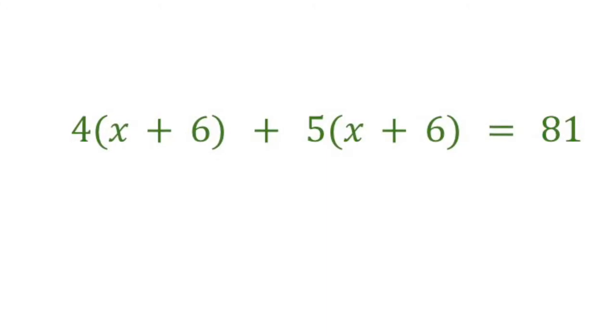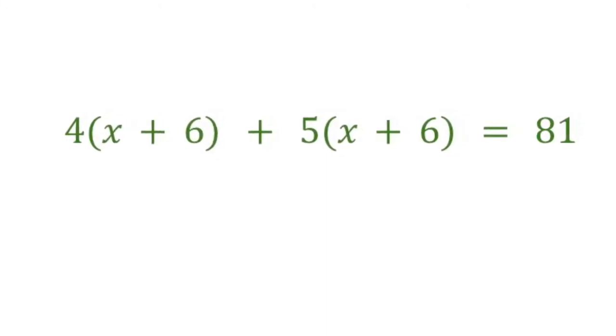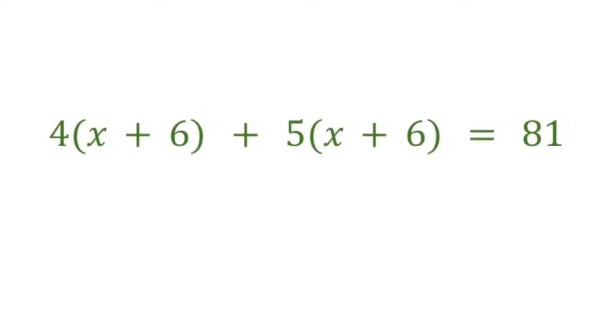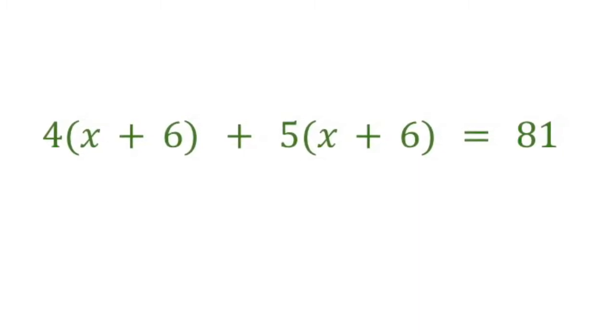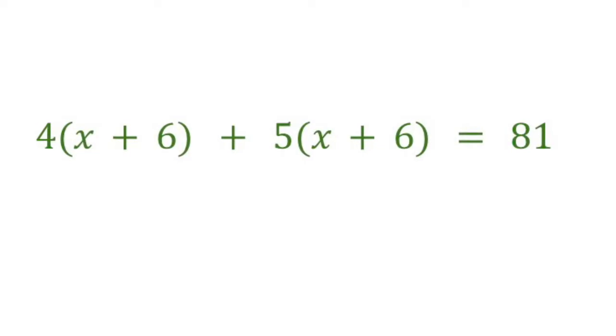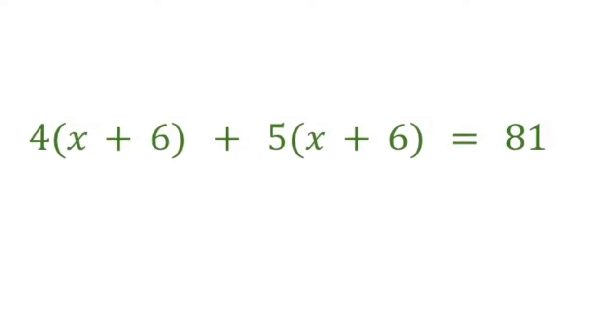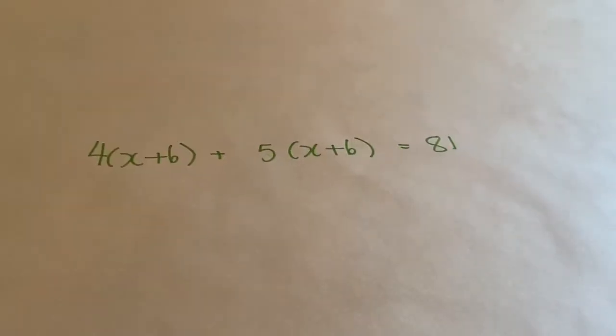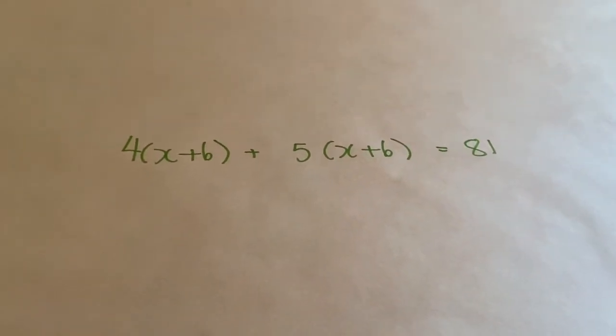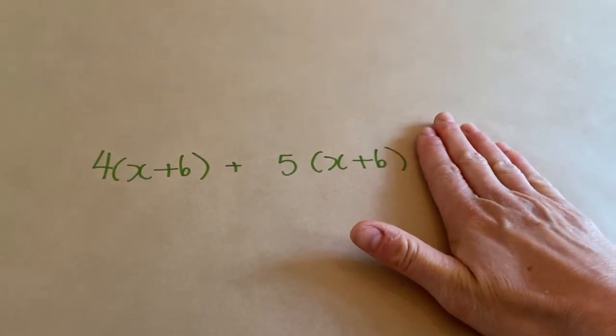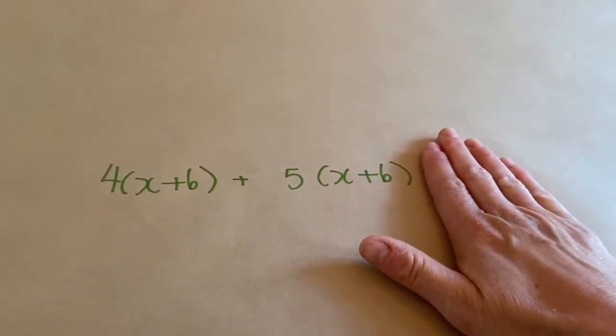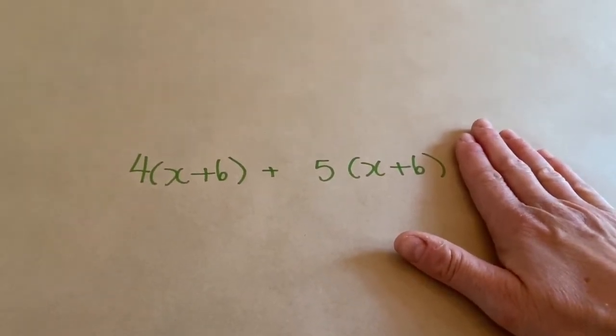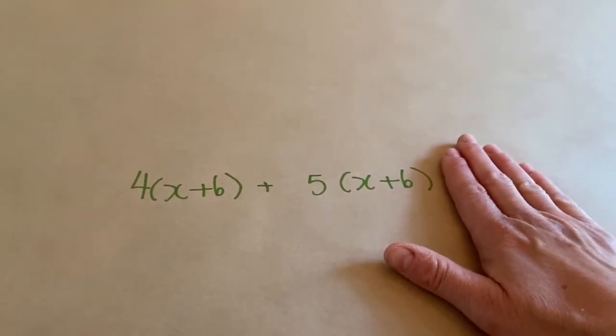We're going to start with the question that was on the first screen of the YouTube video: 4(x+6) + 5(x+6) = 81. Here you see we've got multiple x's, we'll have to put them together and collect like terms, and we're also going to have to multiply into the brackets. Just like we did yesterday, let's first simplify and forget about solving. That means let's cover up the 81 and just worry about simplifying first. Simplifying means eliminate the brackets and make it shorter, so put together the things that belong together.